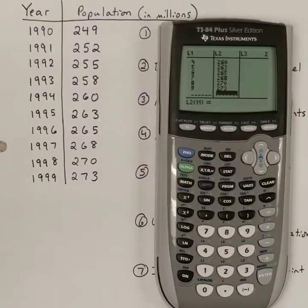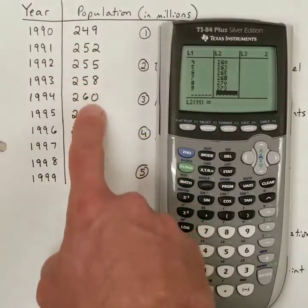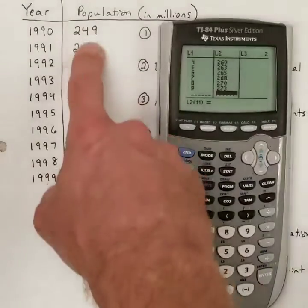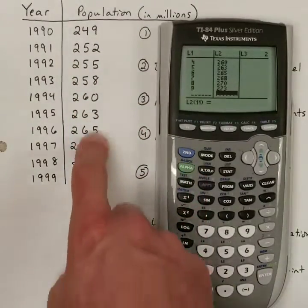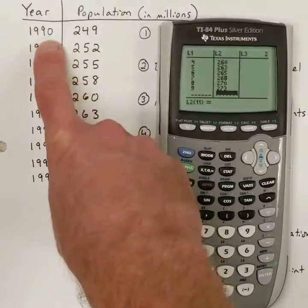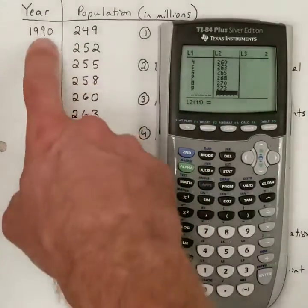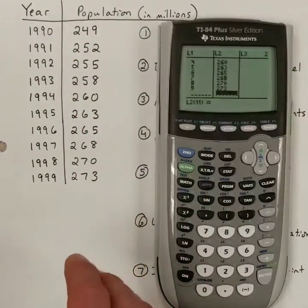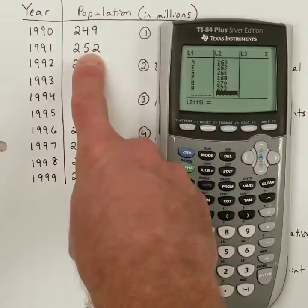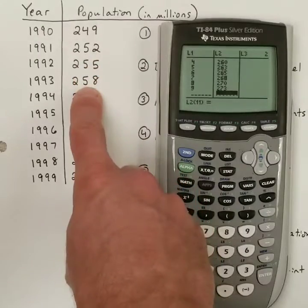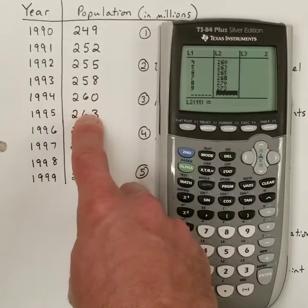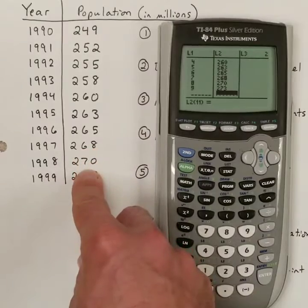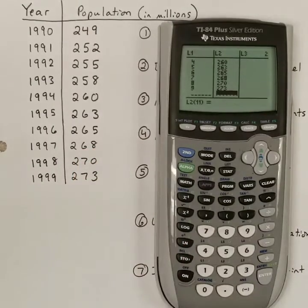One thing I want to point out before I move on is that there is somewhat of a pattern in these population numbers. If you notice, for each year, each increase of 1 on the left, there's an increase of approximately 3 on the right. So here's a jump of 3, here's a jump of 3, a jump of 3, a jump of 2, 3, 2, 3, 2, 3. So it's usually a jump of 3 with a few jumps of 2 in there.